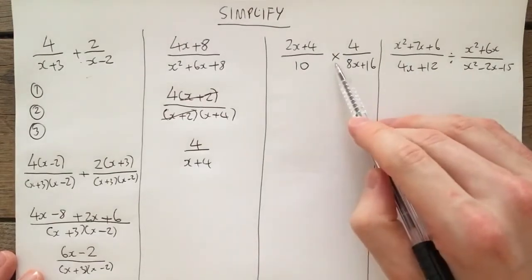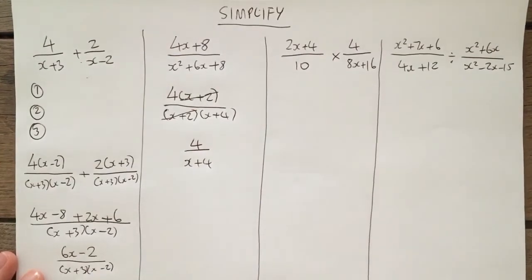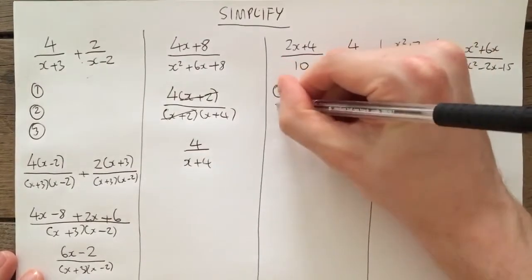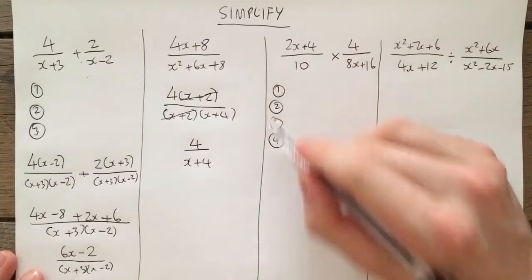OK, now this one here does have an operation. It says multiply. So that's when you think back and you think, what steps did I do when I've got to multiply algebraic fractions? Well, the first step of 4 is, can I factorize?